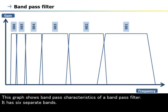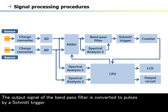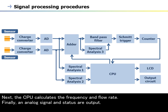This graph shows band-pass characteristics of a band-pass filter. It has six separate bands. The output signal of the band-pass filter is converted to pulses by a Schmidt trigger. Next, the CPU calculates the frequency and flow rate. Finally, an analog signal and status are output.